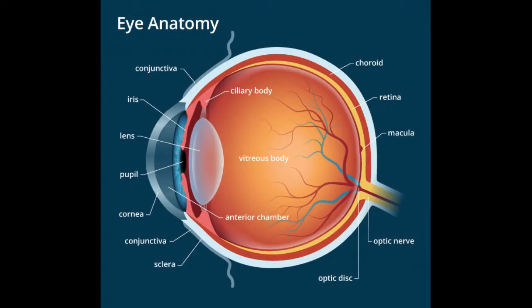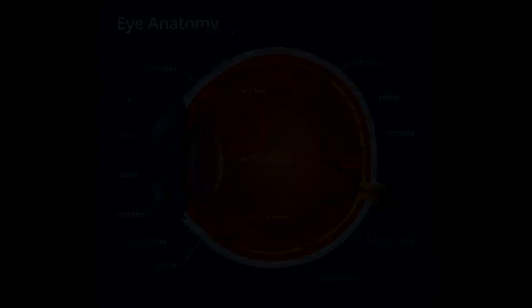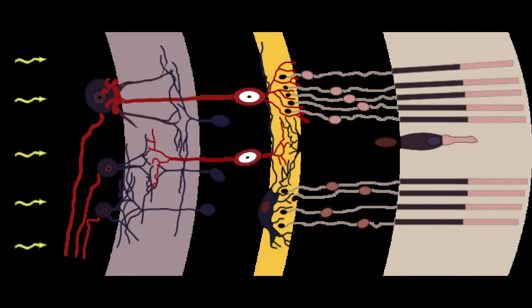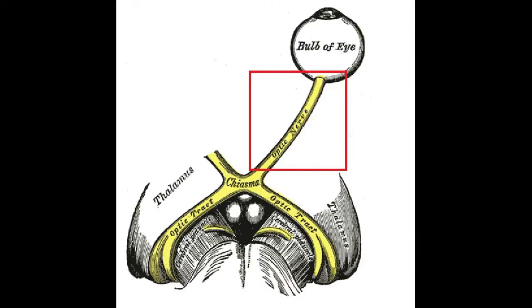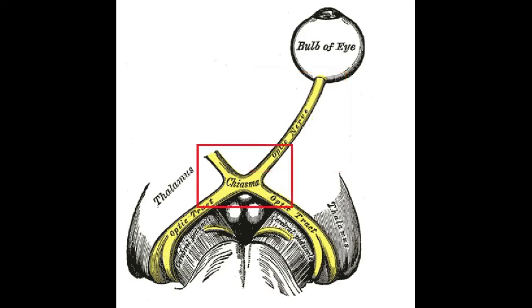Everything starts with the retina. Light enters through the cornea, hits the back of our eyes, and a layer of photosensitive cells called the retina. The nerve fibers that stem from these cells bundle together to form the optic nerve, and they exit through the back of the eye in something called the optic disc. What happens next is that both nerve bundles from each eye cross each other and form what's called the optic chiasm — meaning intersection.